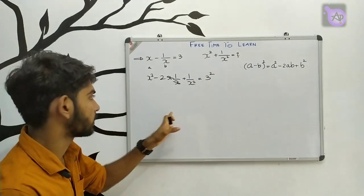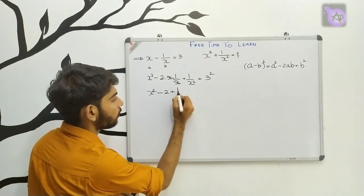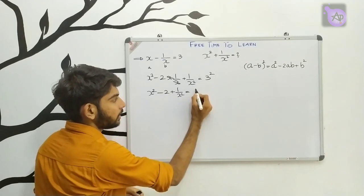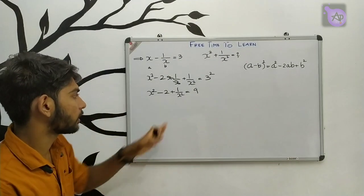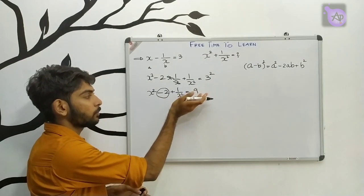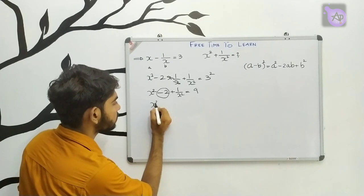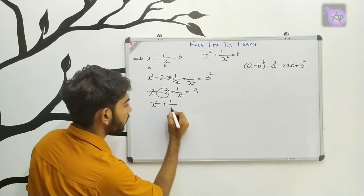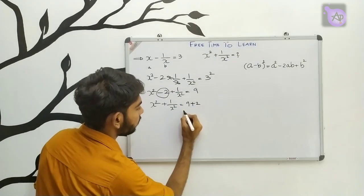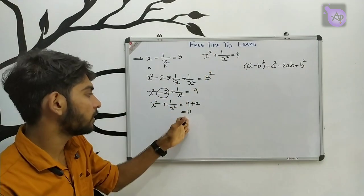Simplifying: x squared plus 1 by x squared minus 2 equals 9. Therefore, x squared plus 1 by x squared equals 9 plus 2 equals 11. So x squared plus 1 by x squared equals 11.